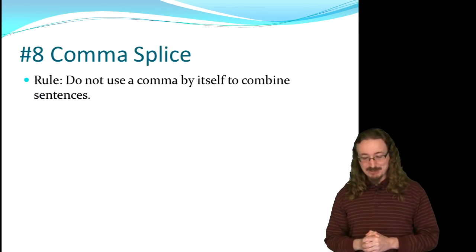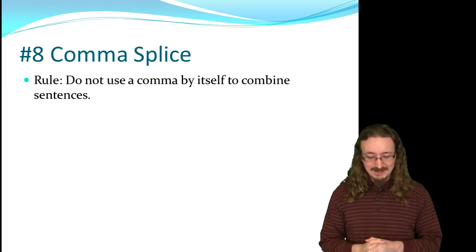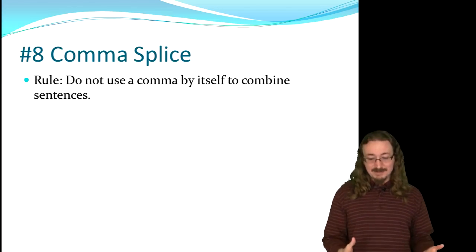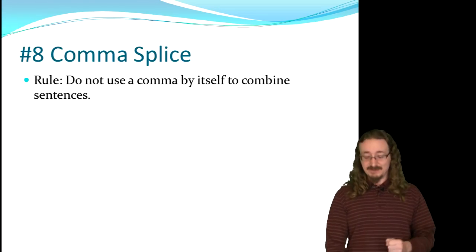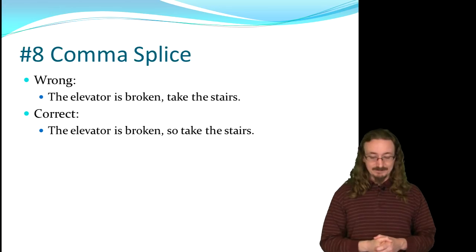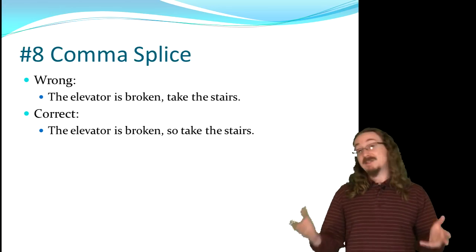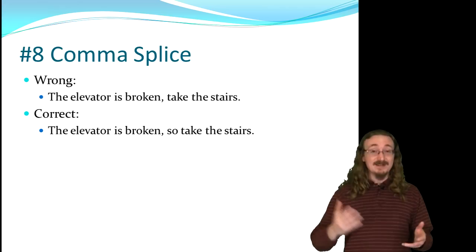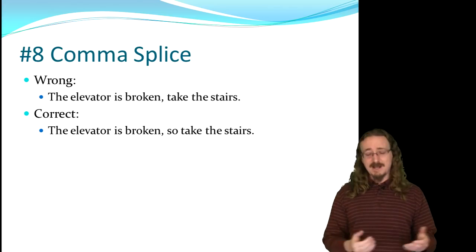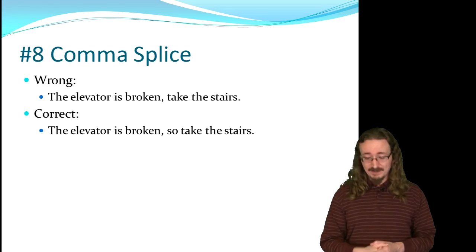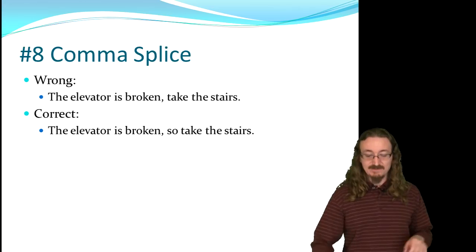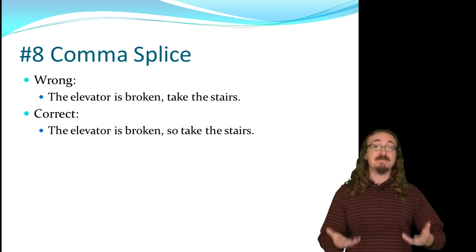Number 8: the comma splice. A very common error — the rule is simply do not use a comma by itself to combine two sentences. 'The elevator is broken, take the stairs' is wrong. You need an extra word: 'The elevator is broken, so take the stairs.' You could also make two separate sentences or use a dash. Lots of ways to fix it, but you can't just have the comma by itself.